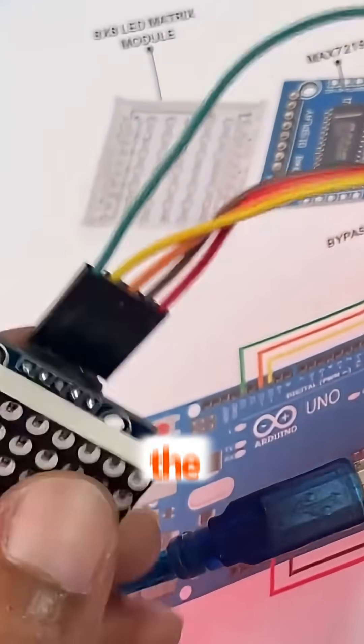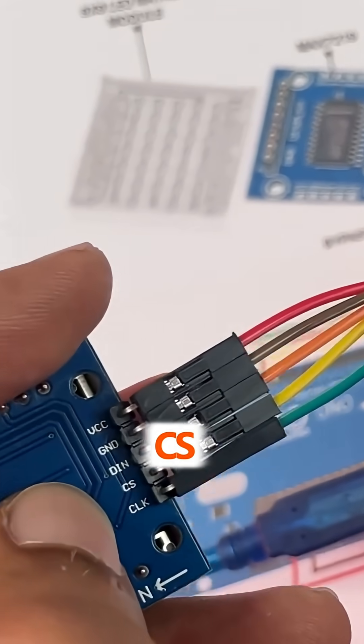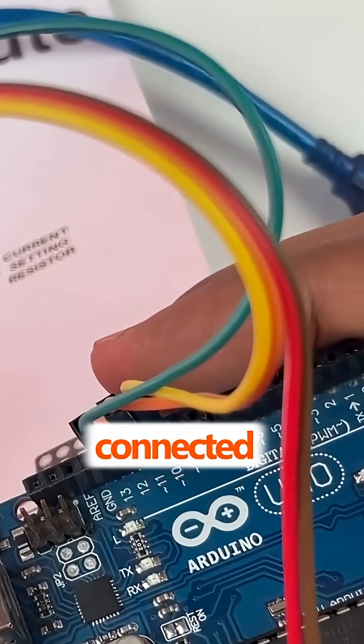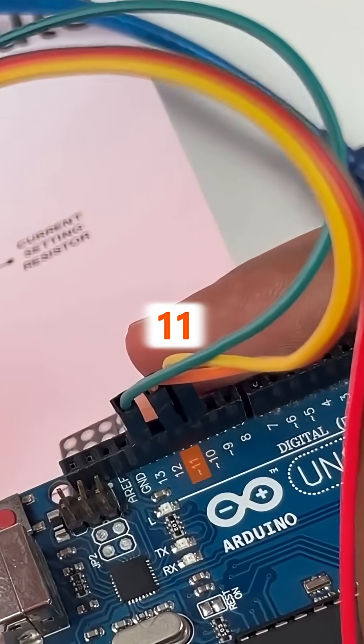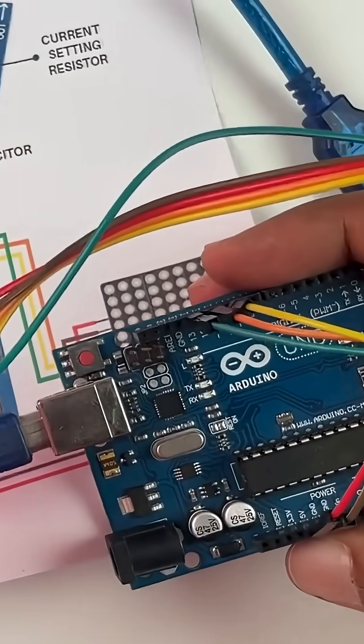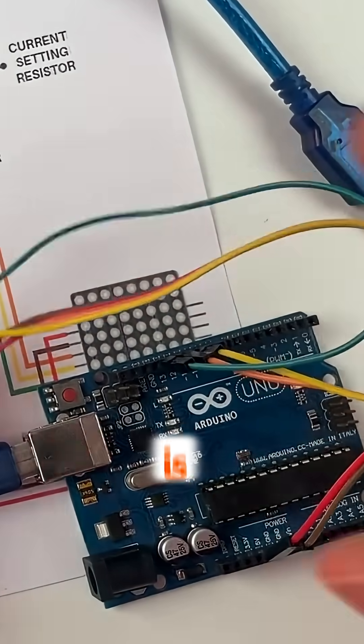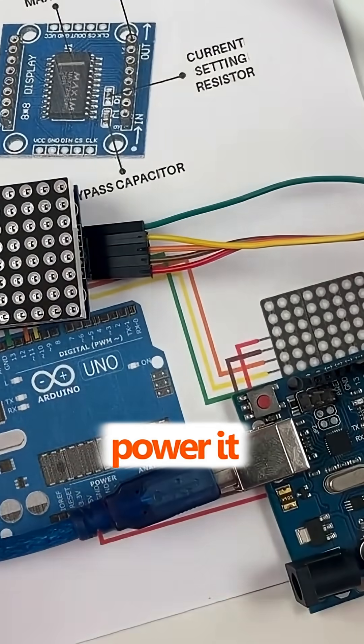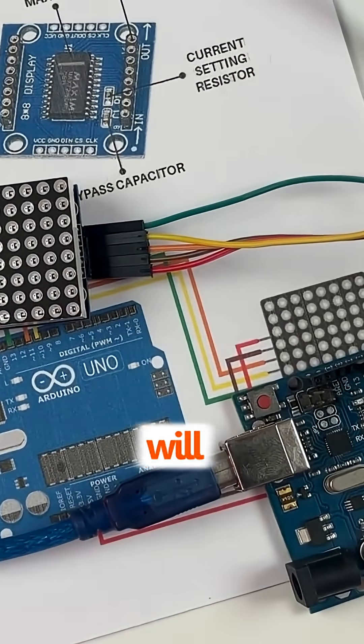And the DIN, CS, and clock pins are connected to pin number 10, 11, and 13 respectively. With this connection, all you have to do is upload the code and power it, and your dot matrix display will start working.